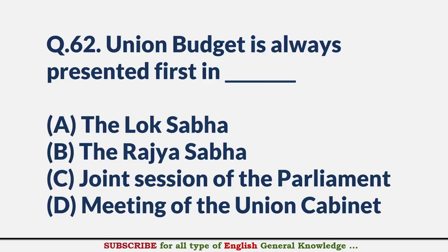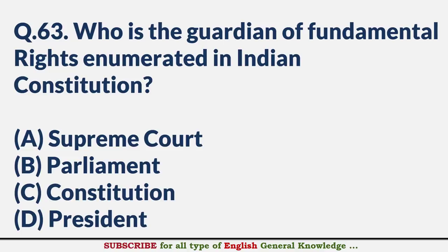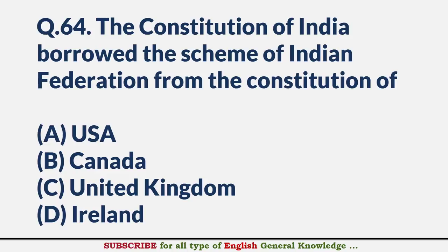Union Budget is always presented first in? — Answer A: The Lok Sabha. Who is the guardian of fundamental rights enumerated in the Indian Constitution? — Answer A: Supreme Court. The Constitution of India borrowed the scheme of Indian Federation from the constitution of? — Answer B: Canada.